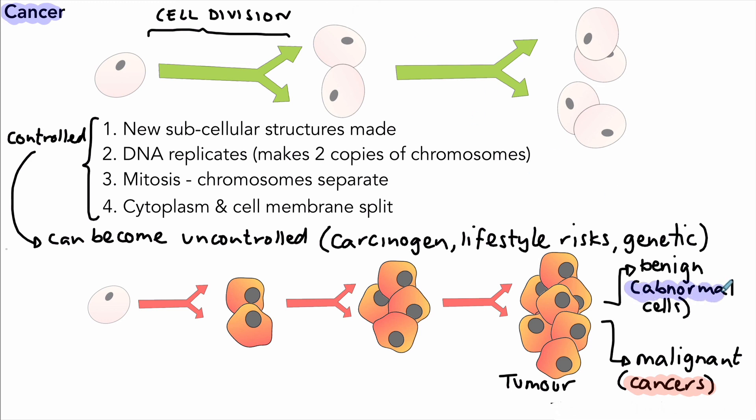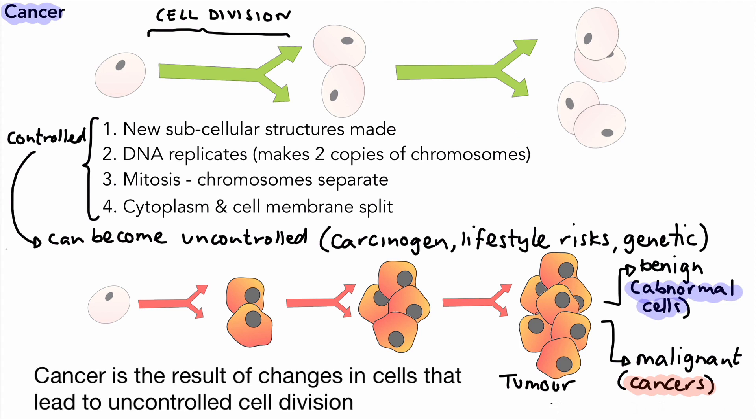So there we have it. An overview of cancer. And in summary we can say cancer is the result of changes in cells that lead to uncontrolled cell division as described above. Thank you for watching and I'll see you soon.